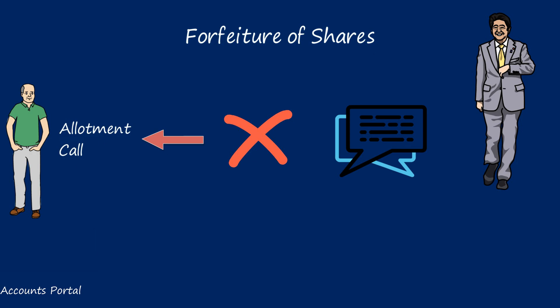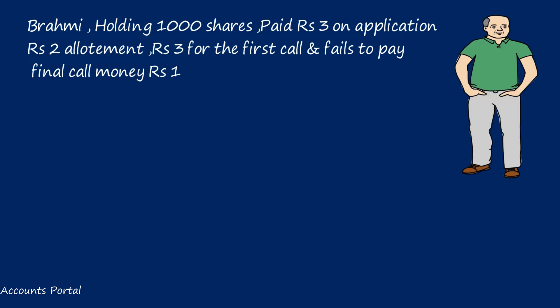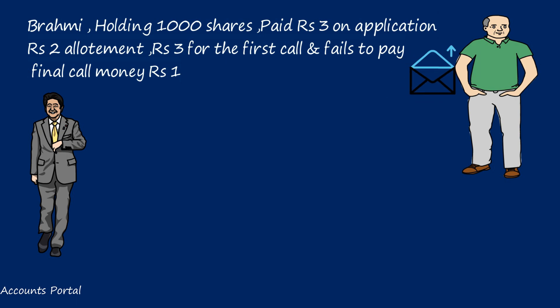Brahmi, a shareholder holding 1,000 shares, paid rupees 3 for the application, rupees 2 for the allotment, and rupees 3 for the first call, but failed to pay the final call money of rupees 1 per share. He paid 9 out of 10 rupees. The directors asked him to pay that one rupee for 1,000 shares, and he failed to pay. Directors then issued a notice to Brahmi stating that if he does not pay the rupees 1,000 within 14 days, his shares will be forfeited.